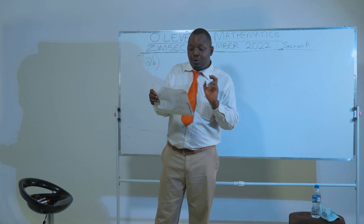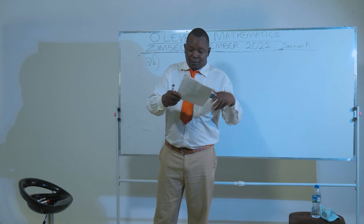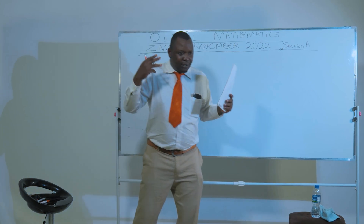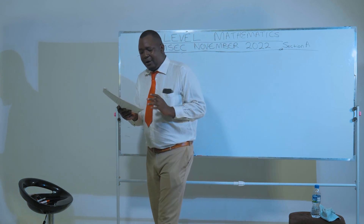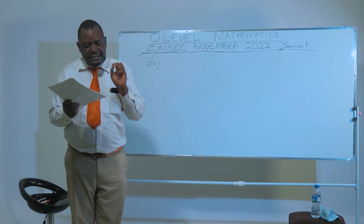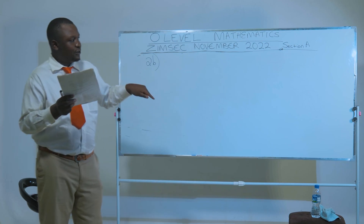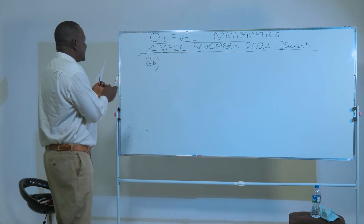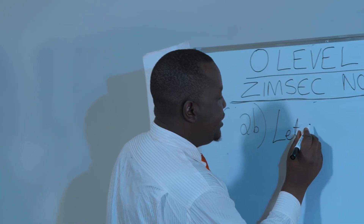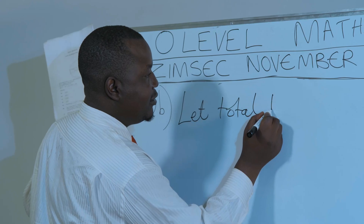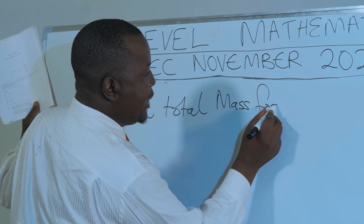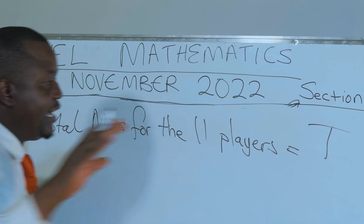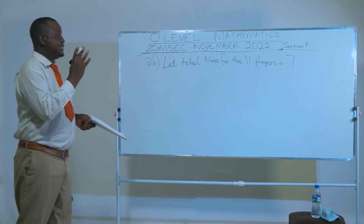It's very important that you comprehend the question. Let the total mass for the 11 players be equal to T — you can use any letter of the alphabet. As you know, the total T divided by 11 gives the average.